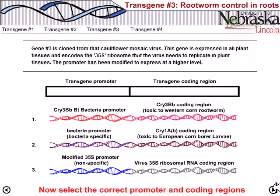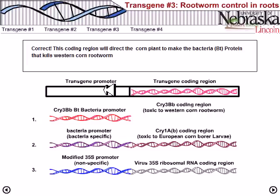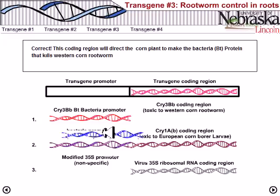In this case we need to express the toxic material for the corn rootworm, not the European corn borer. So we must take the Cry3Bb coding region as our transgene coding region. We need high production of this product, so we must take the modified 35S promoter from gene three, which is non-specific. That's how we can make this transgene.